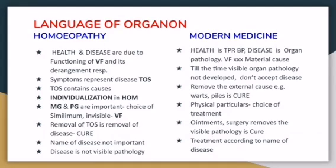Let us look at the language of organon. In homeopathy, health and disease are considered due to the functioning of vital force — disease is its derangement. In modern medicine, health is measured by temperature, pulse, respiratory rate, and blood pressure. Disease is considered organ pathology; they deny the existence of vital force, and material cause is considered the cause of disease.